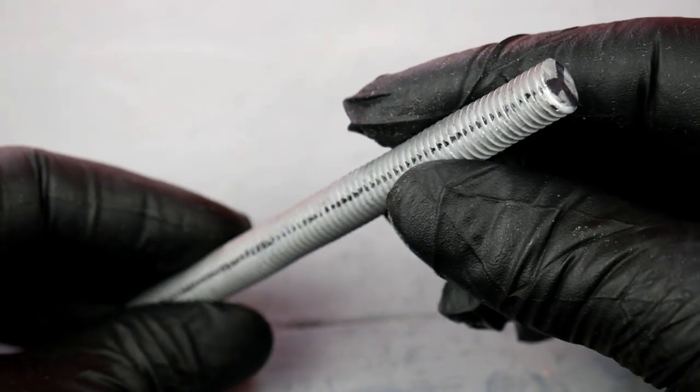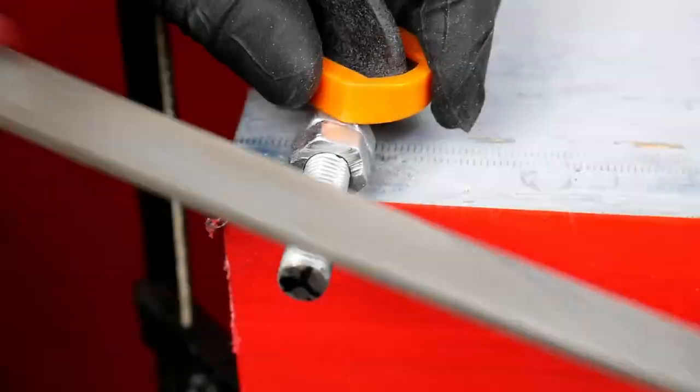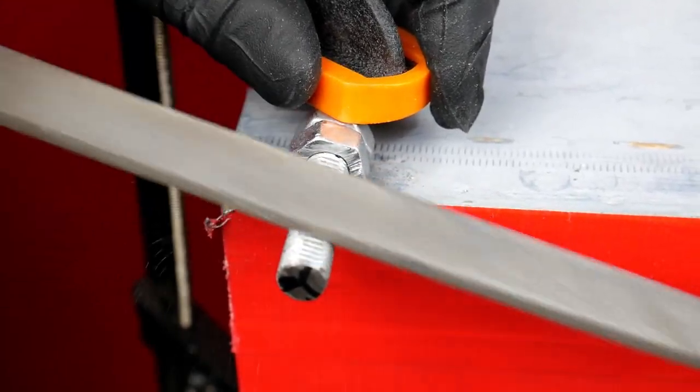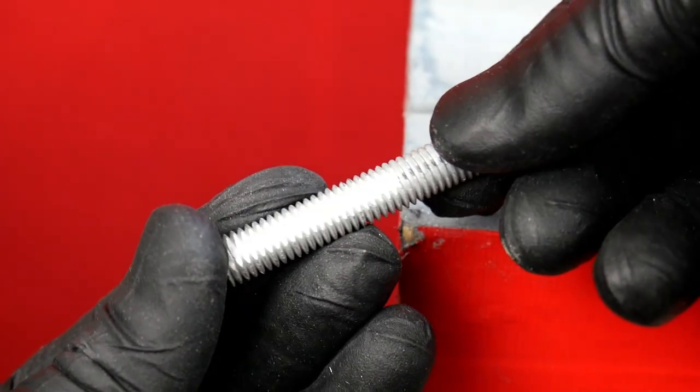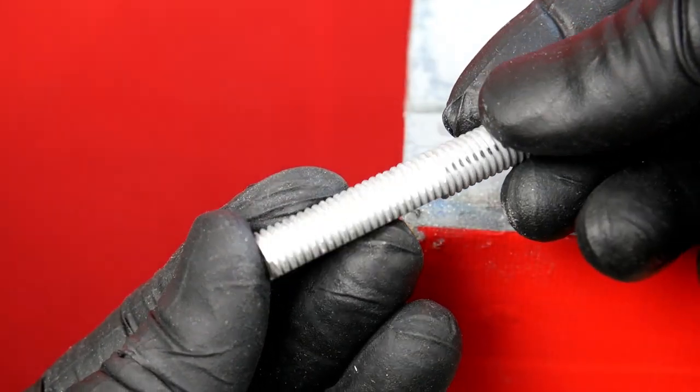So I will make 3 equal marks on the threaded rod, and file the thread flat 40mm on each of the marks on each side. This doesn't need to be very precise, but it does need to be there.